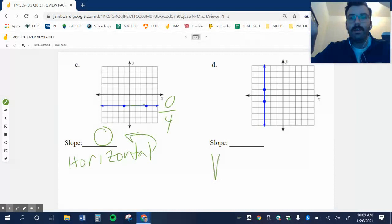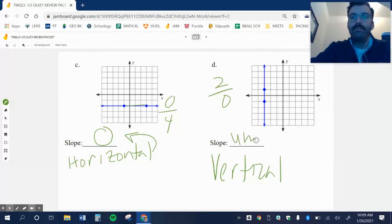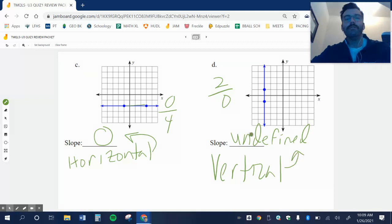This is a vertical line. Vertical lines, I go up 2 over 0, which means I'm undefined. I have an undefined slope. Remember, vertical lines always have an undefined slope.